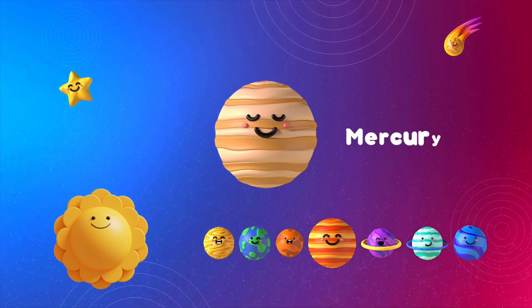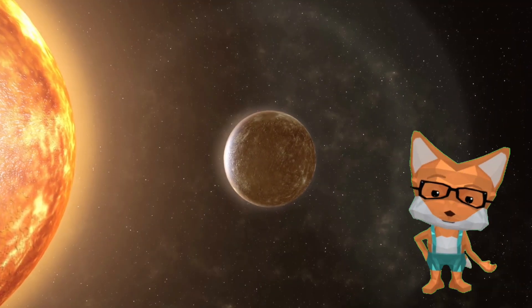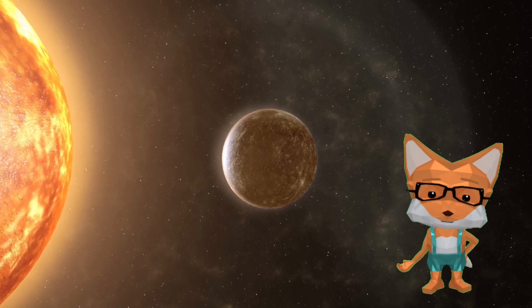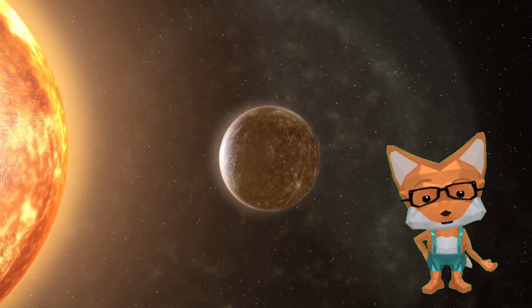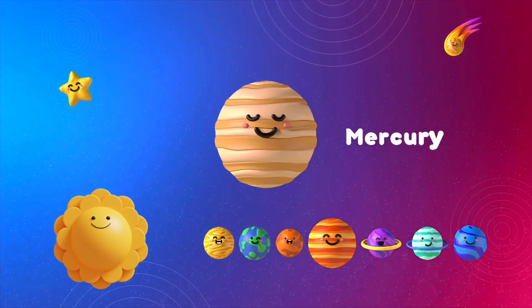Let's meet Mercury, the fastest planet. It goes around the sun so fast, zipping around in just 88 days. But be careful, it's so hot.